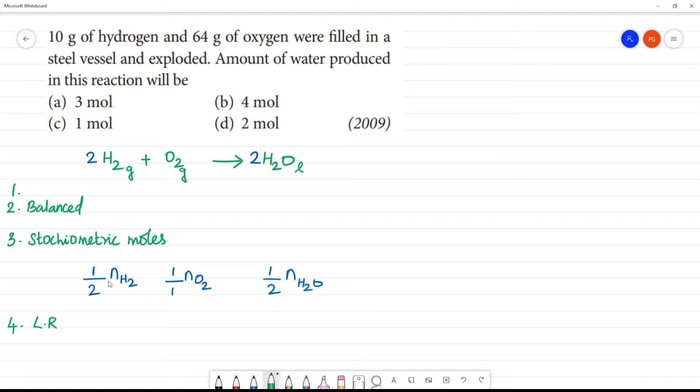Limiting reagent. Number of moles of H2 that is equal to given weight by molecular weight. So that is equal to given weight 10 gram, molecular weight of H2 is 2, so total is 5. So 1 by 2 into number of moles of H2 is 5, that is 5 divided by 2, this is 2.5 mole.